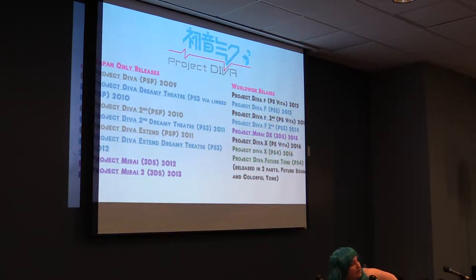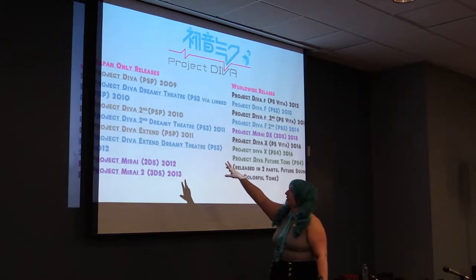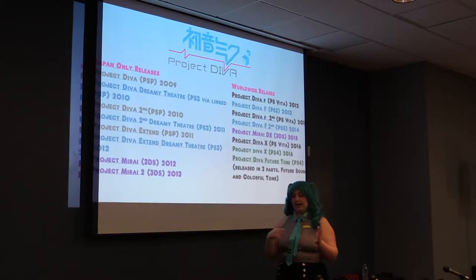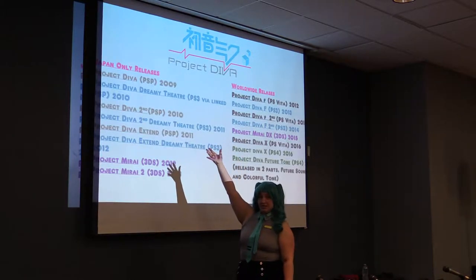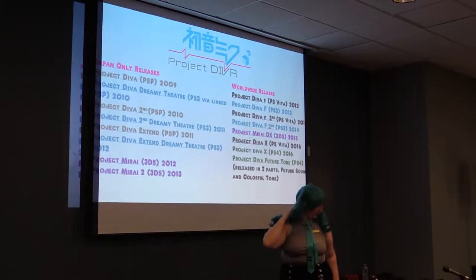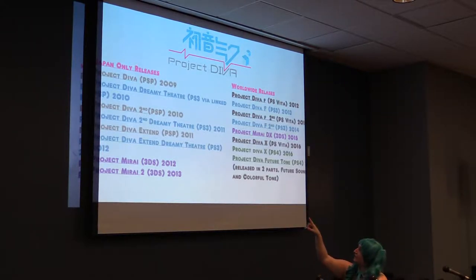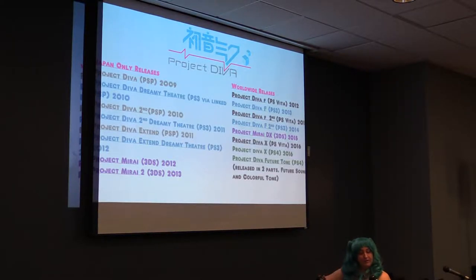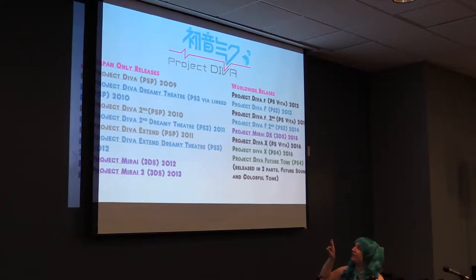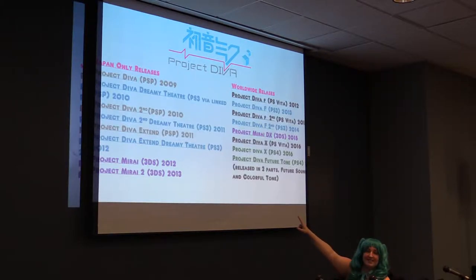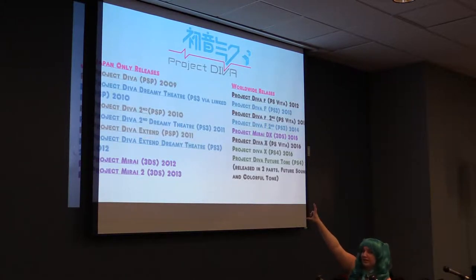Here are all the games released so far. They started in 2009, a year after Miku's software came out. The first one was on the PSP, called Project Diva. Then came Dreamy Theater — basically the same game on PS3 — but you had to buy it for both systems and physically connect them every time you played. For Project Diva 2nd, it was the same thing, but you only had to link them once. Then Extend — same thing. Those were Japan-only releases.